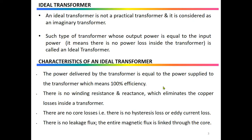An ideal transformer is not a practical transformer — it is considered an imaginary transformer — because in such a type of transformer the output power is equal to the input power. The efficiency of the transformer will be 100%, because whatever we get at input we are getting at output, meaning there is no power loss inside the transformer. However, this is not possible, so these transformers are not practical; they are considered imaginary and ideal.